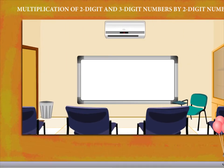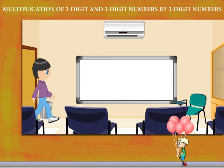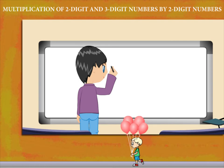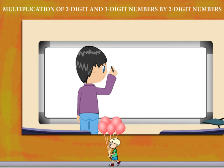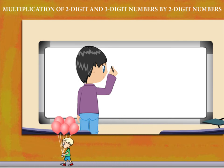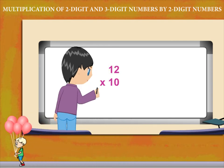Multiplication of 2-digit and 3-digit numbers by 2-digit numbers. Here comes Boni to multiply 12 by 10.